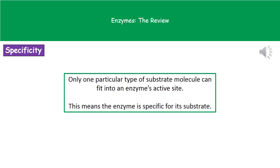Only one particular type of substrate can fit a given active site, because the shapes are so specific. This means the enzyme is specific for that substrate. This leads to a common exam question about why you couldn't use enzyme X for two different reactions — the answer is that the active site is specific for one particular substrate.